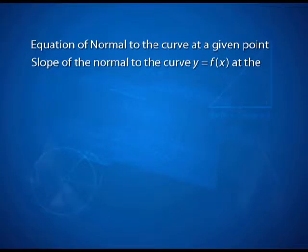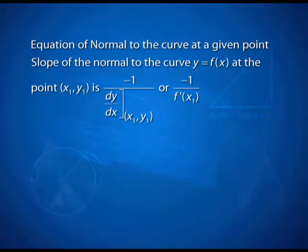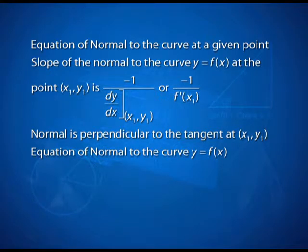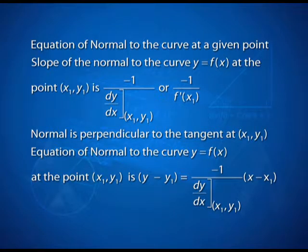We also have the equation of the normal to the curve at a given point. The slope of the normal at the point (x₁, y₁) to the curve y = f(x) is given as −1 divided by (dy/dx at x₁, y₁). Why? Because the normal is perpendicular to the tangent at the point of contact. Therefore, the equation of the normal to the curve is: y − y₁ = [−1 / (dy/dx at x₁, y₁)] × (x − x₁). This is straightforward, but remember: to form the equation of a line — in this case the tangent — you need two important quantities: the point and the slope of the tangent.